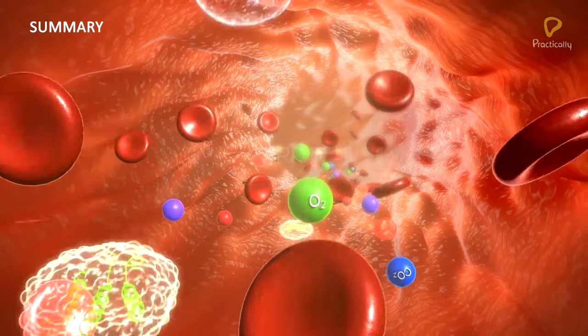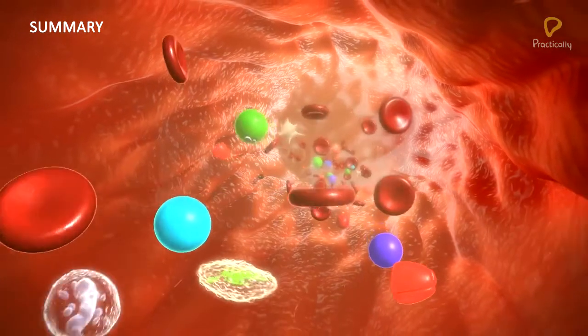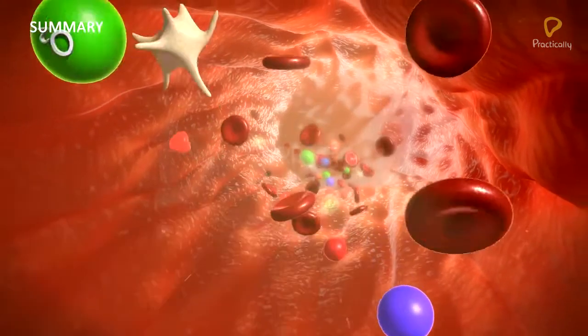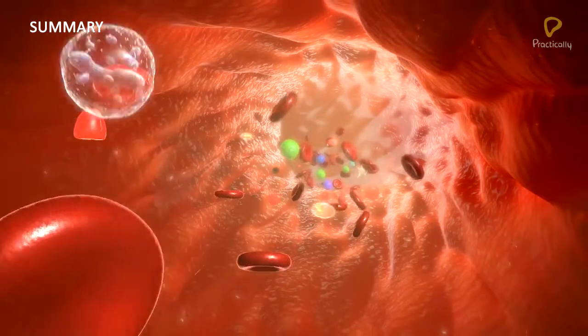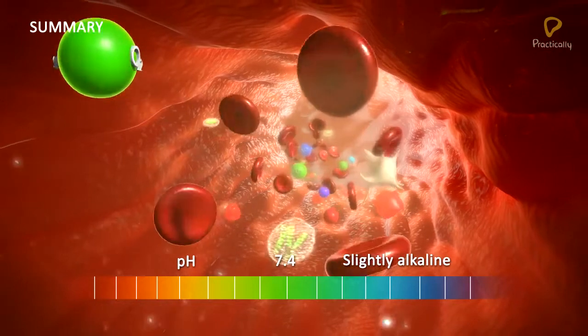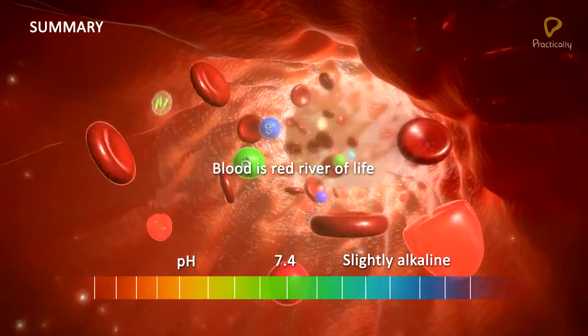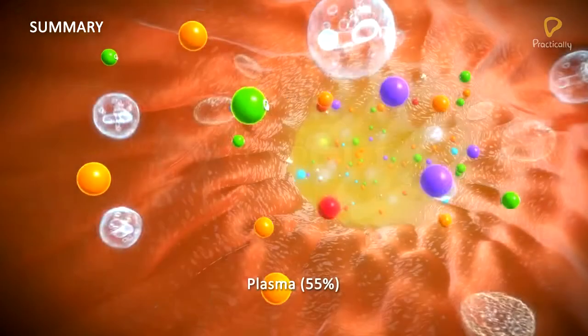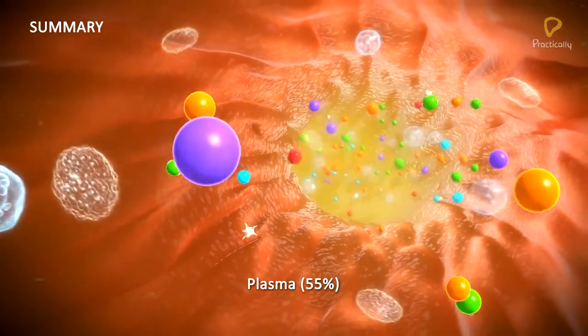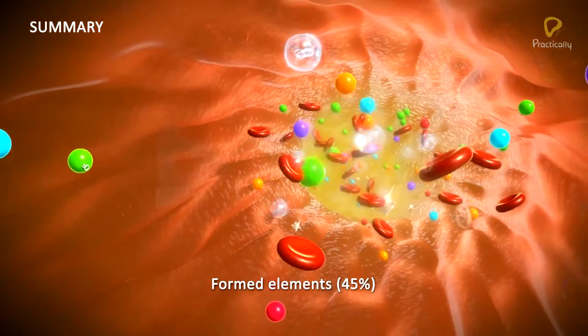Blood is a special connective tissue with a fluid matrix called the plasma. It is a red-colored, opaque, viscous fluid, slightly alkaline in nature with a pH of 7.4. It is referred to as the red river of life. The plasma constitutes 55% of its total volume, and the formed elements constitute 45%.